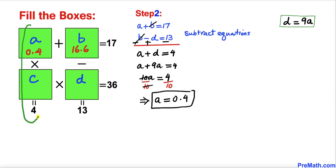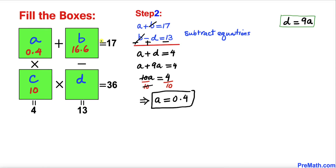Let's focus on the left two vertical boxes: A times C equals 4. We know A is 0.4, so C has got to be 10, because 0.4 times 10 is indeed 4.